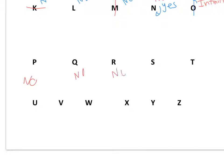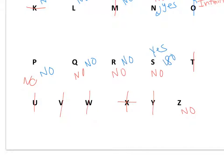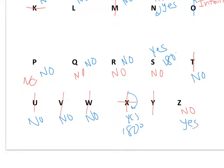For the remaining letters: no lines of symmetry for most; some have one line of symmetry. For rotational symmetry: no, no, no — yes, point symmetry at 180 degrees — no, no, no — yes, you can rotate it 180 degrees — and yes, you can rotate it 180 degrees, so that's also point symmetry.